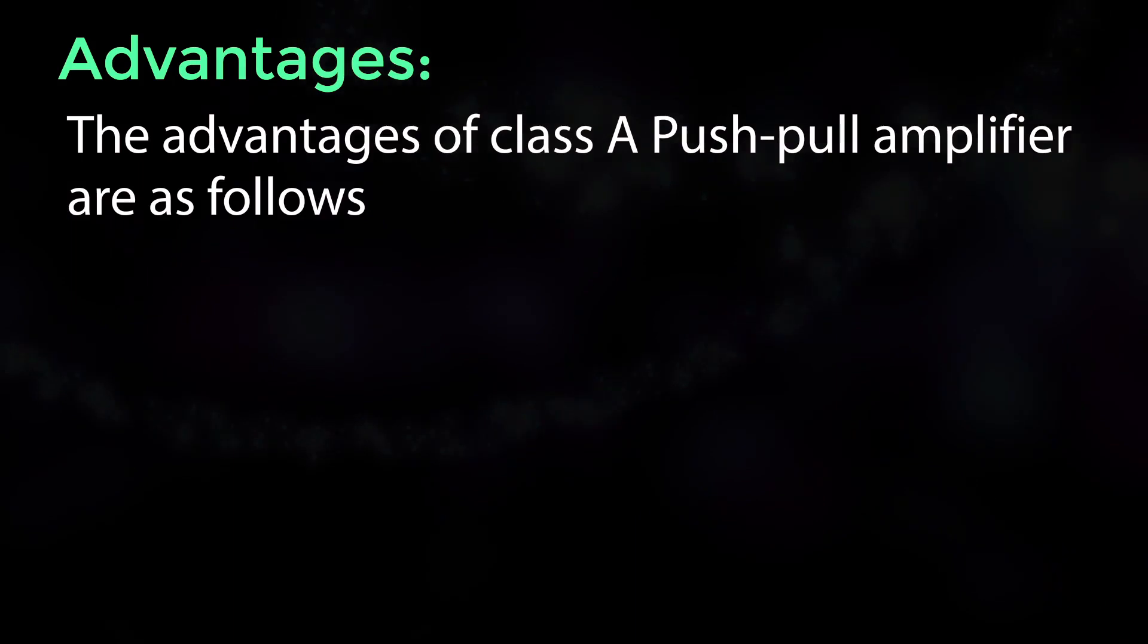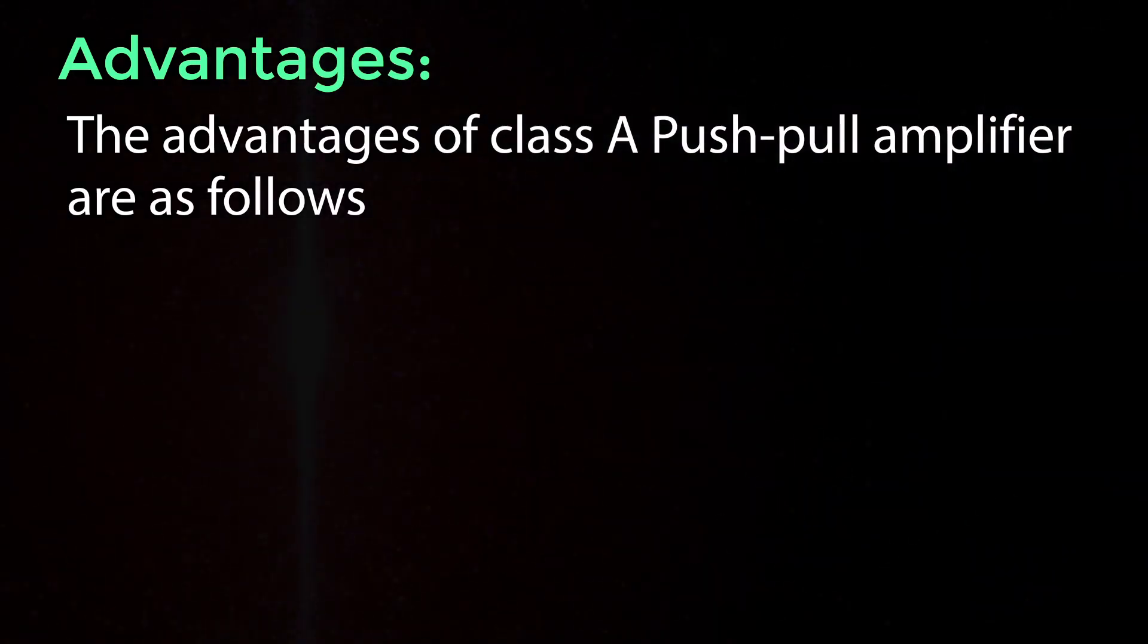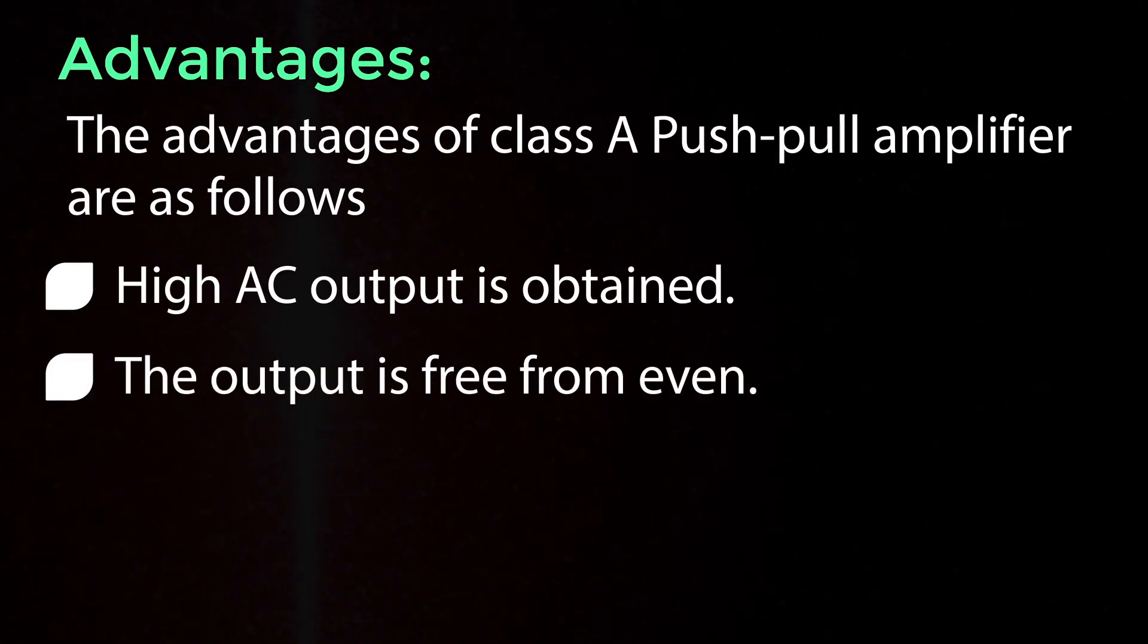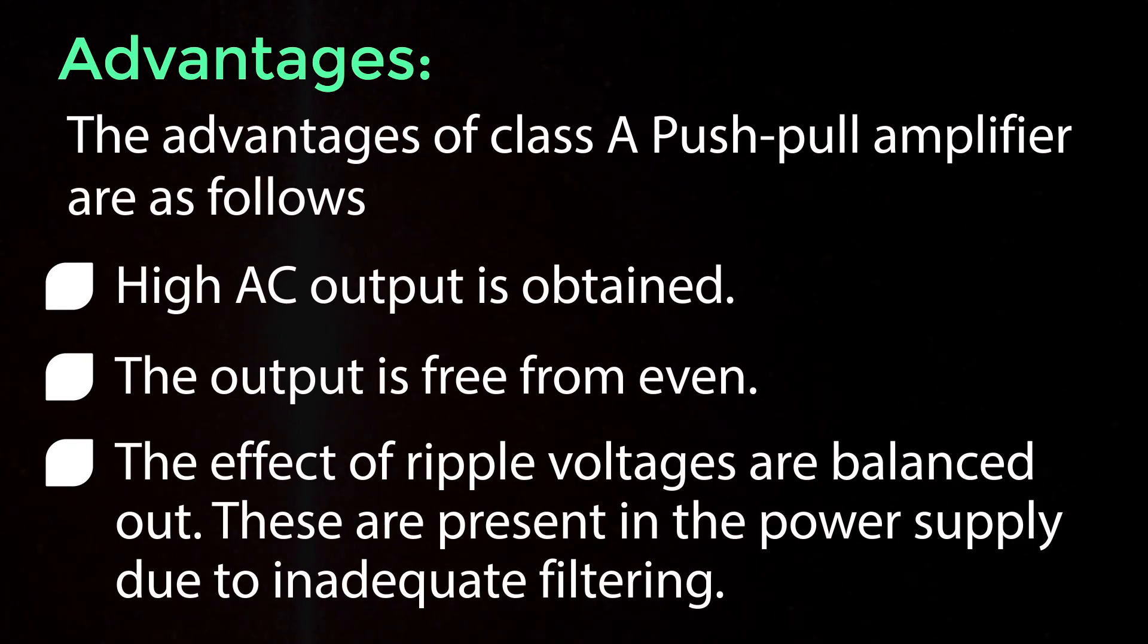The advantages of Class A push-pull amplifier are as follows: High AC output is obtained, the output is free from even harmonics, and the effect of ripple voltages are balanced out. These are present in the power supply due to inadequate filtering.